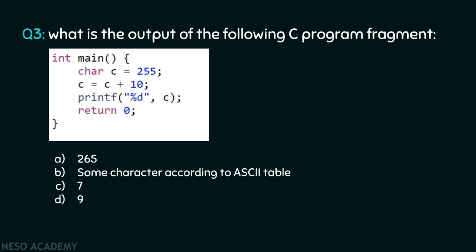Let's consider the next question. What is the output of the following C program fragment? Here I have provided a character variable c and assigned it a value of 255. You can assign integer values to a character variable. Here the value is incremented by 10 and stored again in the variable, making it 265. Can you guess the output: is it 265, some ASCII character, 7, or 9?